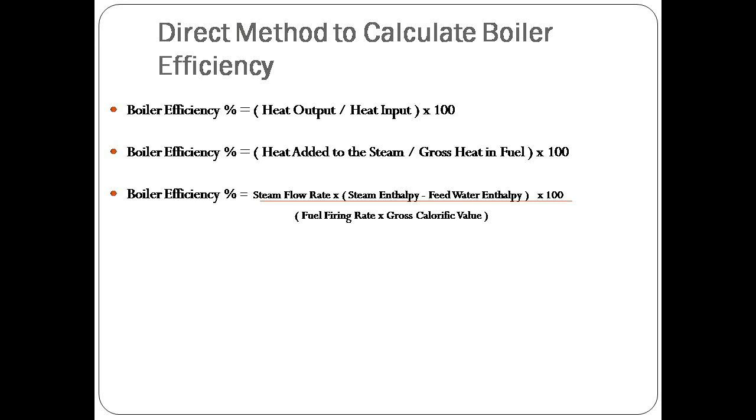Boiler efficiency percentage is equal to heat output divided by heat input multiplied by 100. Now what is heat output in boiler? The heat output in boiler is the heat which is added to the steam or heat which is required to convert water into the steam.